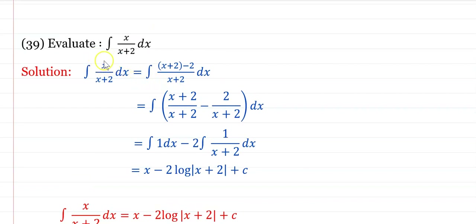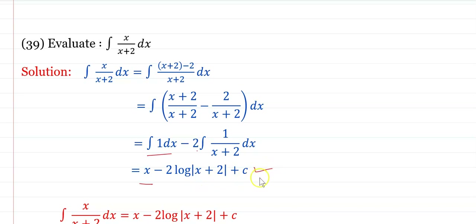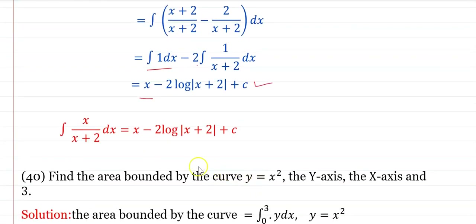Evaluate ∫x/(x + 2) dx. Rewrite x as (x + 2) − 2: ∫[(x+2)/(x+2) − 2/(x+2)] dx = ∫[1 − 2/(x+2)] dx = x − 2·log|x + 2| + C.